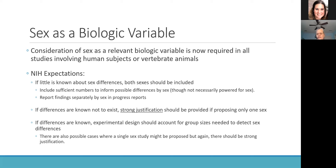Examples where sex as a biologic variable isn't necessary include things like studies where disease is sex-specific, such as prostate or ovarian cancer. If differences are known to not exist, you still need to provide strong justification for why you're proposing only one sex. If differences are known to exist, then the study really should be designed and powered to address those differences. At the moment there's not a requirement for sex as a biologic variable in cell line studies, but the NIH is working on figuring out if there's not a way that can be done.